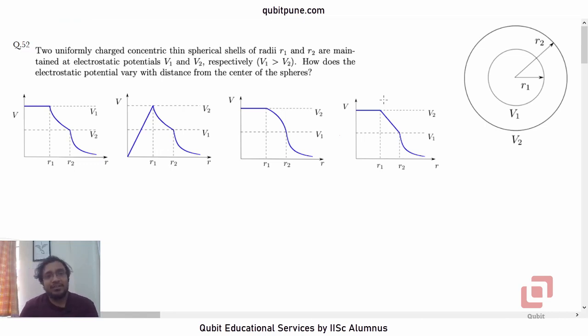Two uniformly charged concentric thin spherical shells of radii R1 and R2 are maintained at electrostatic potentials V1 and V2 respectively, with V1 greater than V2. How does the electrostatic potential vary with distance from the center of the sphere? As you can see here, there are two uniformly charged concentric thin spherical shells. R1 is the inner radius, R2 is the outer radius. They are maintained at electrostatic potentials V1 and V2 respectively, V1 greater than V2.